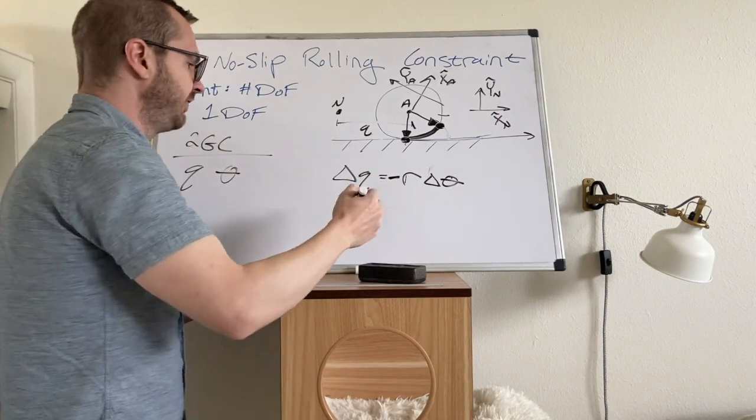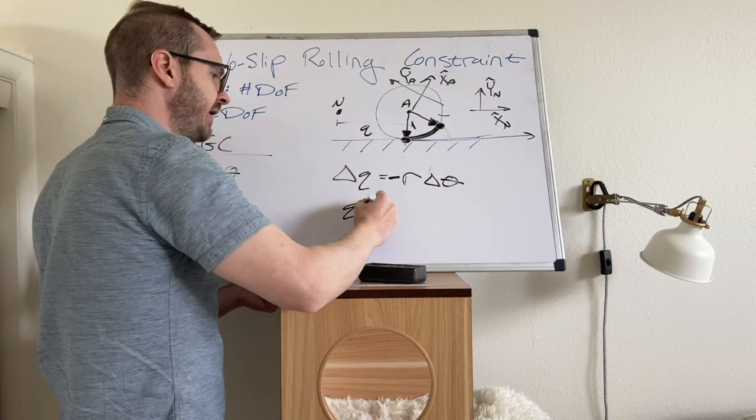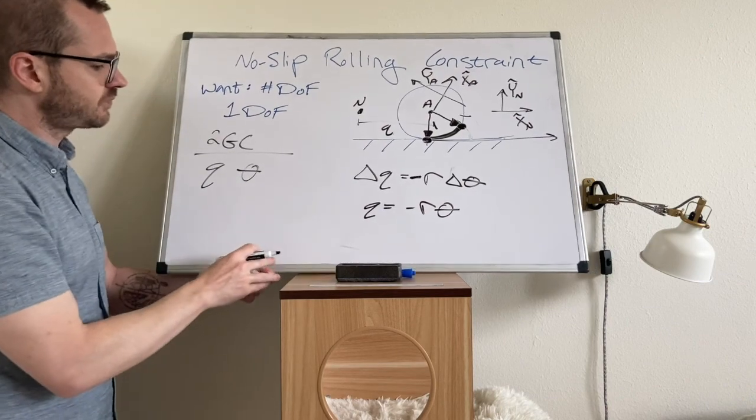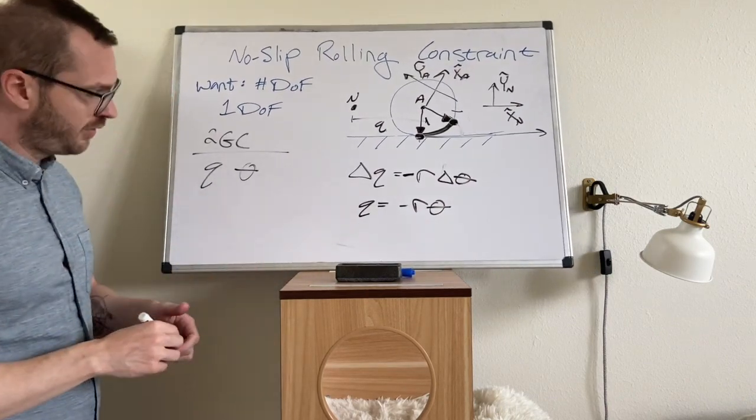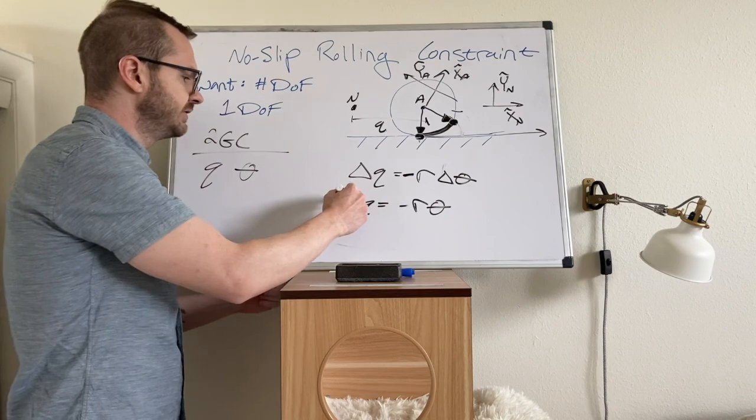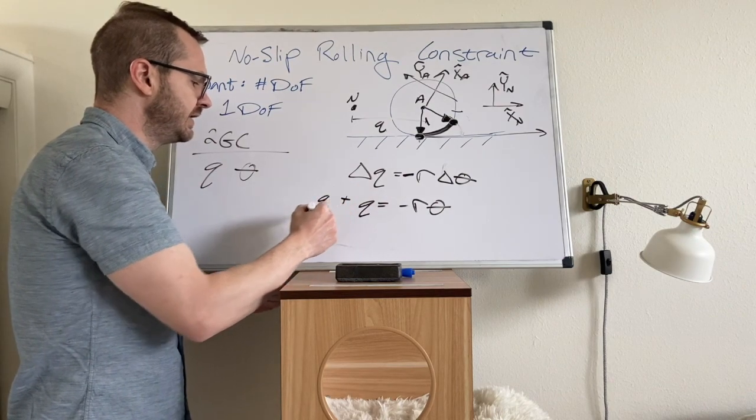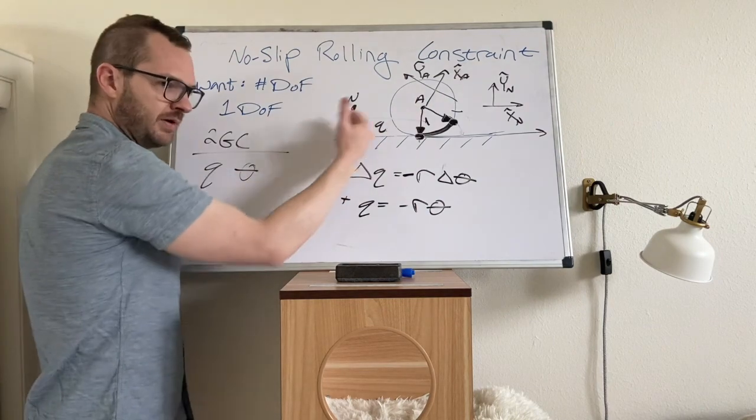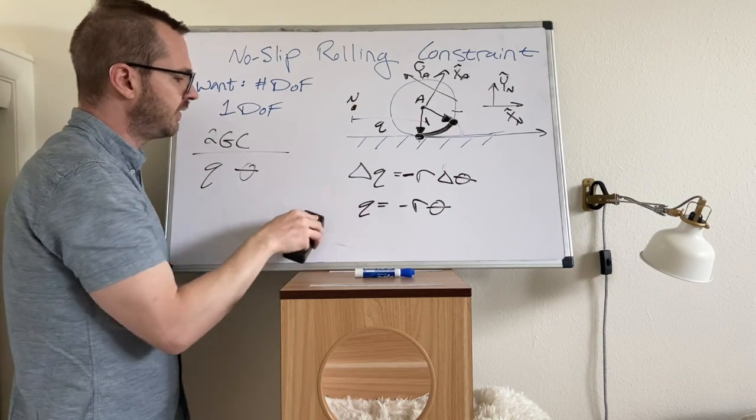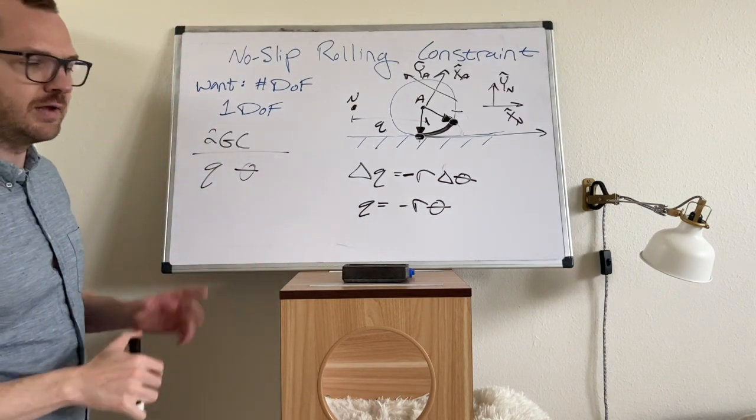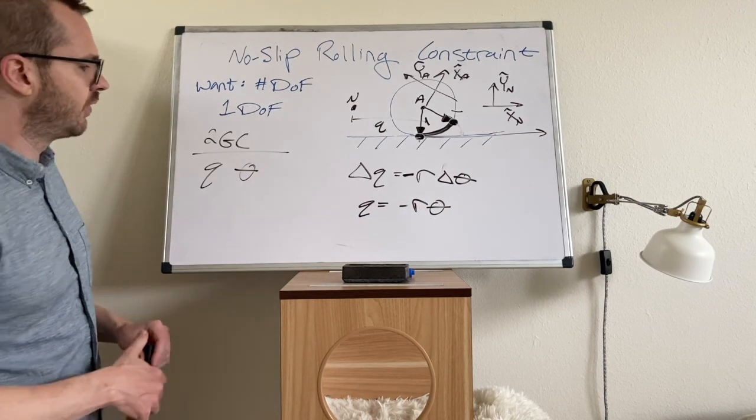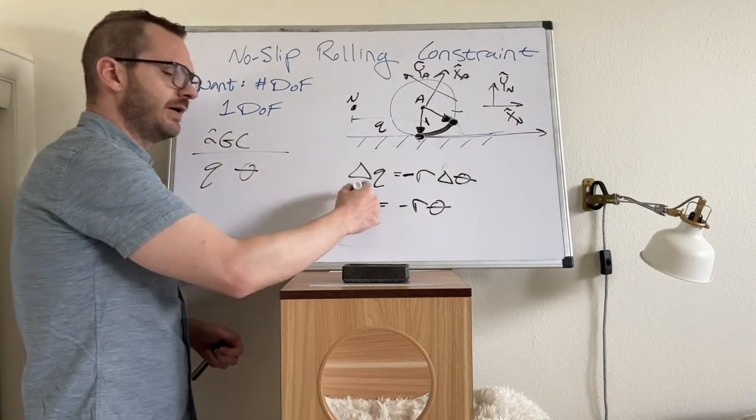The way I would write this, just the constraint equation by itself, is I would drop the delta, and I would say that q is negative r theta. Now, there is built into this equation some assumption about some initial position, maybe, right? Because of where you chose in, there's some initial position. Okay, that's true.